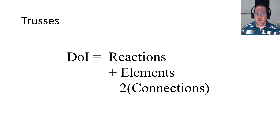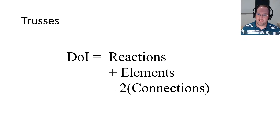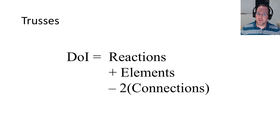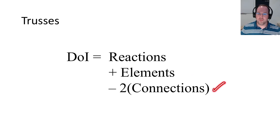Let's start our discussion with trusses. If we count up our unknowns for trusses, we have our reaction forces plus each element has a single unknown — the axial force in that element. We have equations of equilibrium equal to two times the number of connections, since each connection gives sum of forces in x and sum of forces in y. We don't get a useful moment equation at each connection because trusses have no moments. So the degree of indeterminacy is reactions plus elements minus two times your connections.